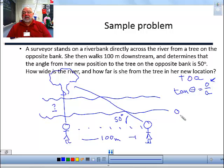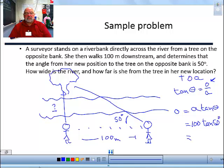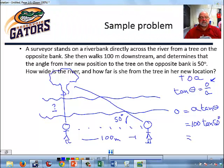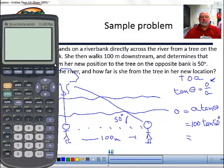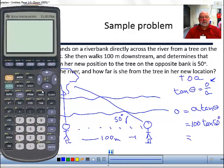The opposite side is equal to the adjacent side times the tangent of the angle. Now I'm going to do some substitutions. The adjacent side is 100 meters long times the tangent of the angle, which is 50 degrees. And let's pull up the calculator so it can do that calculation. And that would be, turn it on, 100 times the tangent of 50.